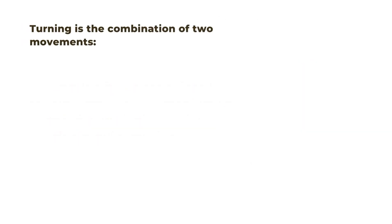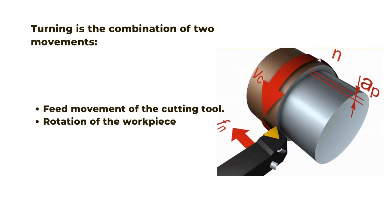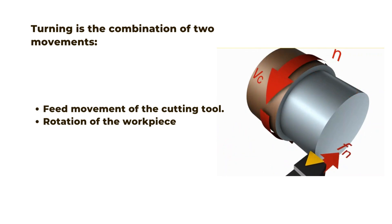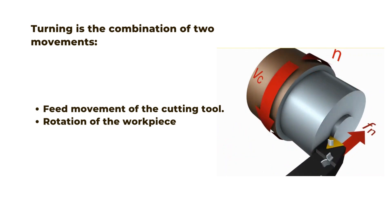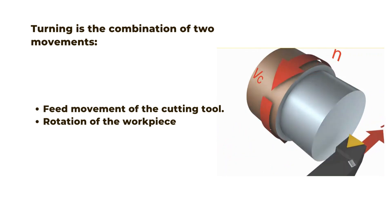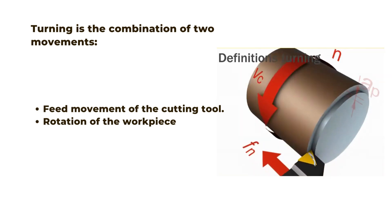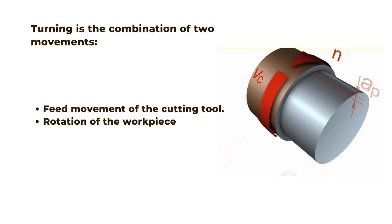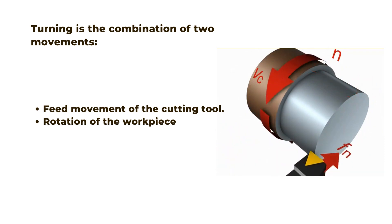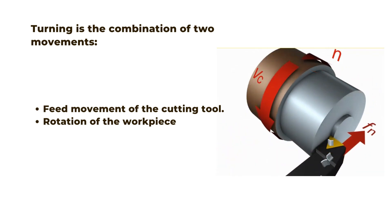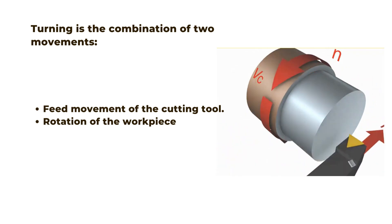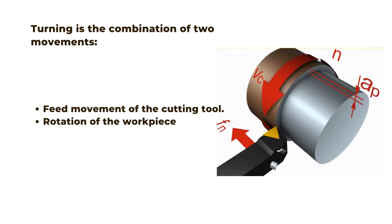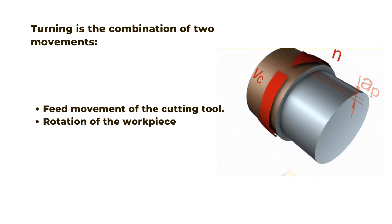Turning is the combination of two movements. The feed movement of the cutting insert can be along the axis of the workpiece or fed toward the center. Cutting feeds are usually combinations of these two directions, resulting in tapered or radius surfaces.